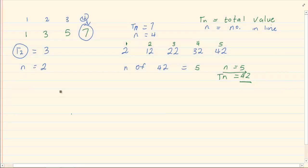In grade 10, the formula you would learn is tn equals an plus b. Now tn would refer to the total value and n would refer to what number it is standing in the row.